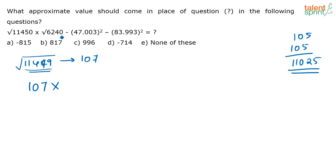Now, 6240. Again, 6240 what will be the square root? See, you know 6400 is 80 squared. So, 6240 somewhere less than, just less than 80. You can take it something as 78 or 79. We don't know. You can just take some value closer to that. Then, minus you have 47 squared minus 84 squared. So, now 84 squared, what answer did we get? We got it as